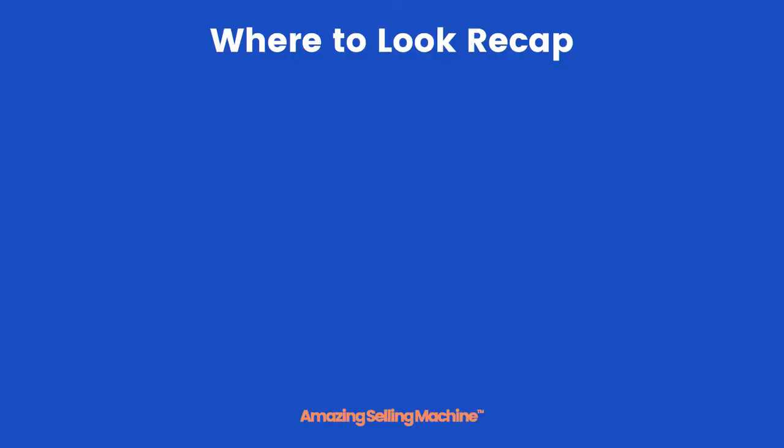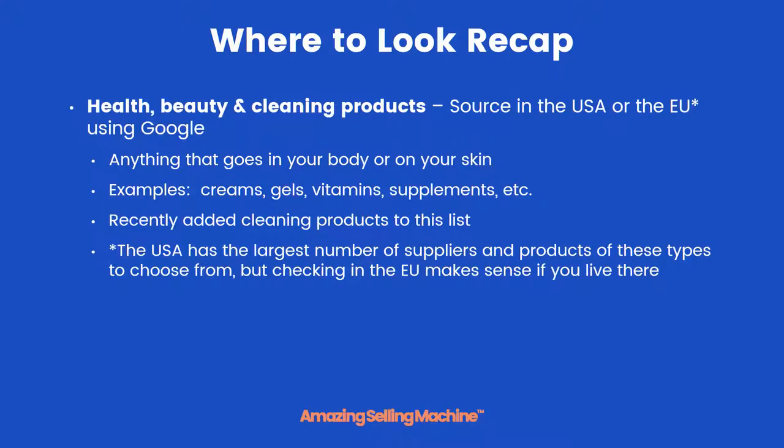Before we log into the browser and start looking for suppliers, let's do a quick recap of where to look based on the type of products we're sourcing. For health, beauty, and cleaning products — pretty much anything that goes in your body or on your skin, such as creams, gels, vitamins, supplements, and cleaning products — you primarily want to source in the United States, and we'll use Google for that. You can also look in the EU if you live there, though the USA still has the largest number of suppliers for these types.